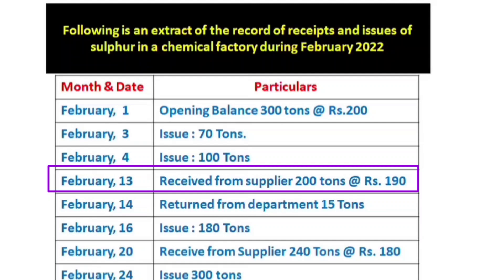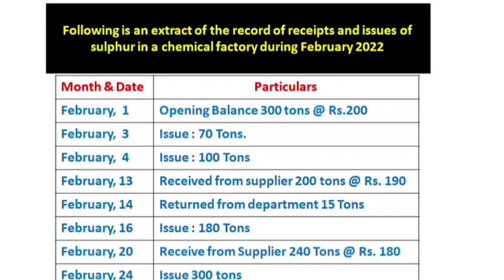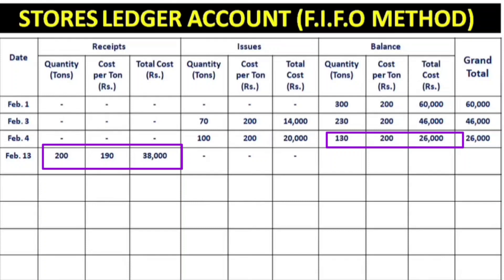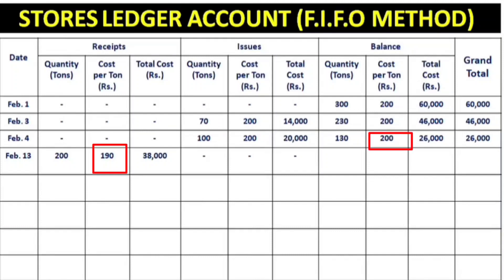On February 13, we received from the supplier 200 tons at 190 rupees each, totalling 38,000. There are no issues on this date, so we only fill in the receipt column. The new balance now has two different rates: 130 tons at 200 rupees (26,000) plus 200 tons at 190 rupees (38,000), giving a grand total of 64,000.